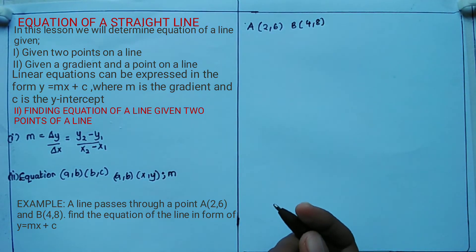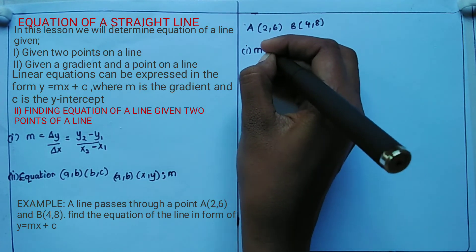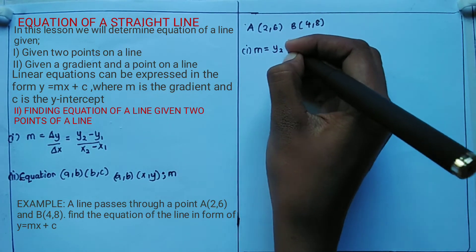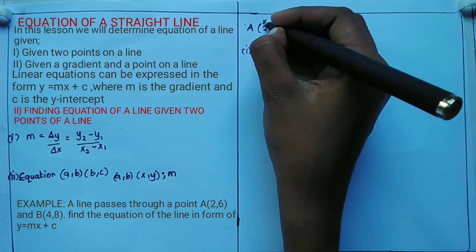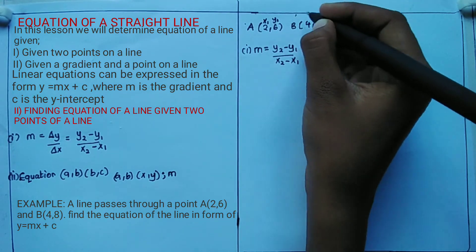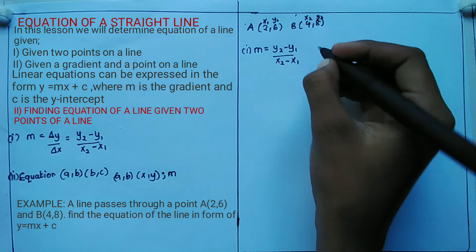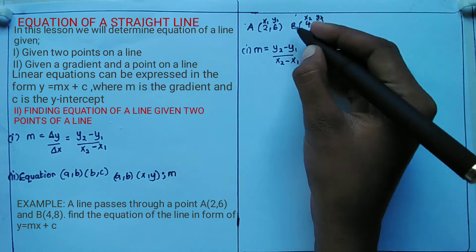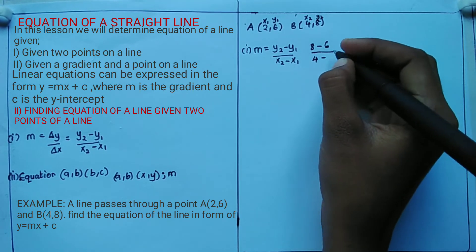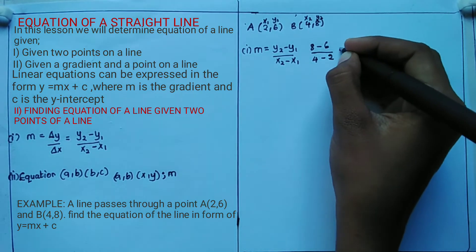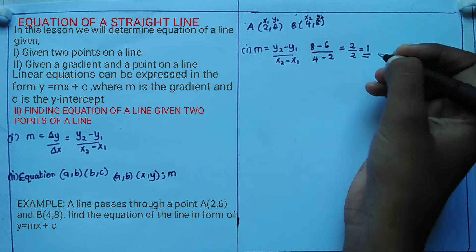In step one, find the gradient m = (y2 - y1) / (x2 - x1). Here x1 = 2, y1 = 6, x2 = 4, y2 = 8. So m = (8 - 6) / (4 - 2) = 2 / 2 = 1. That is the gradient.